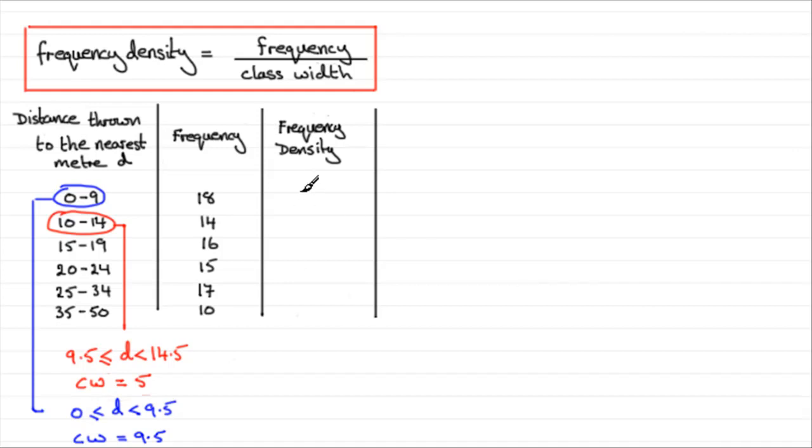So in order to put this first value in here for the frequency density, we've got to do 18 divided by the class width from 0 to 9.5, which is 9.5. So if you do 18 divided by 9.5, the value you get back is 1.89 and so on.